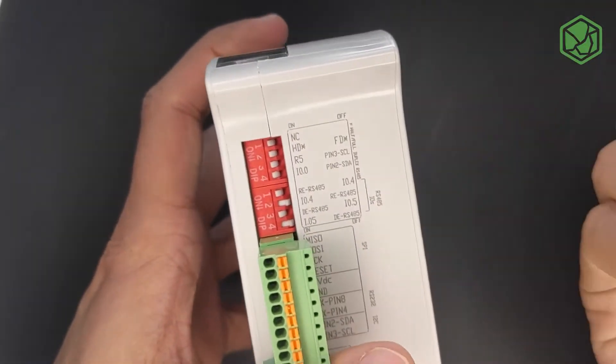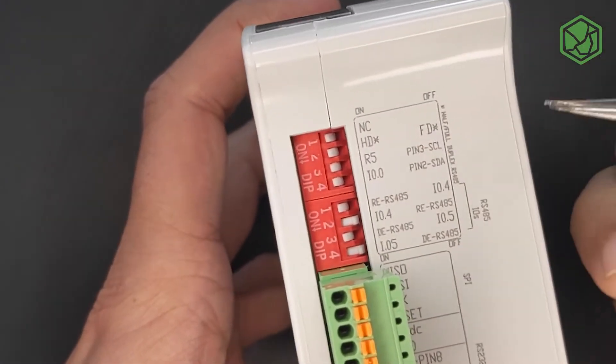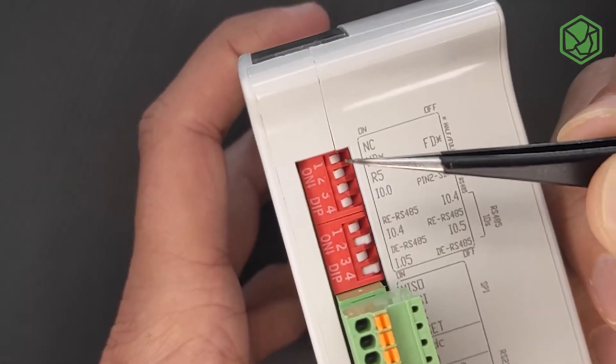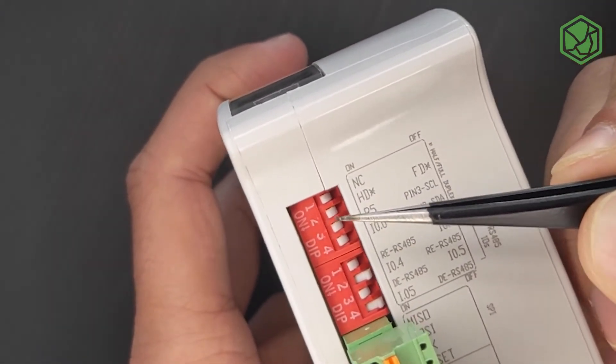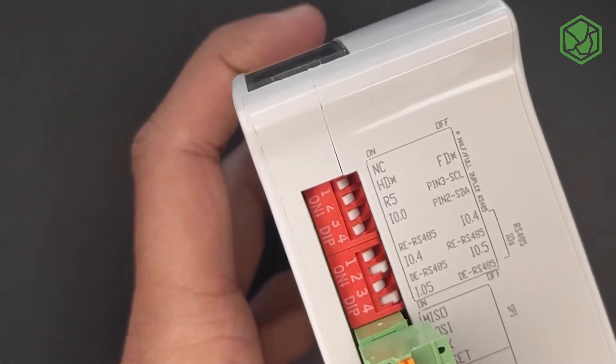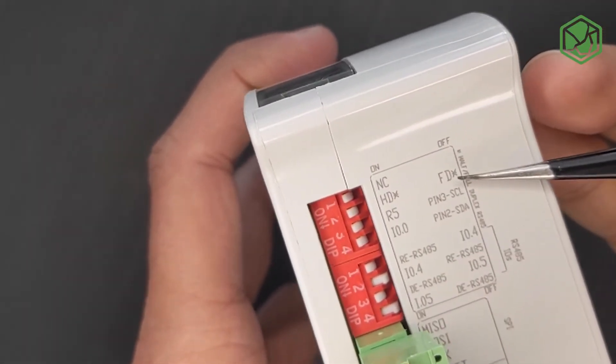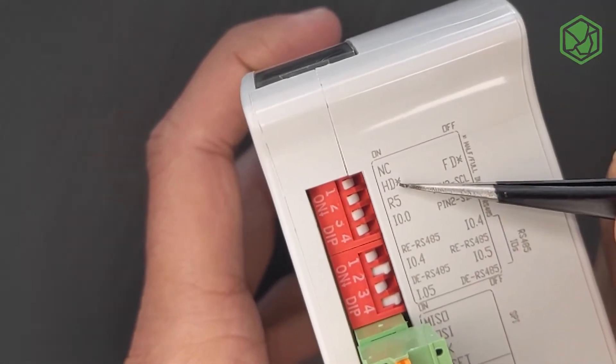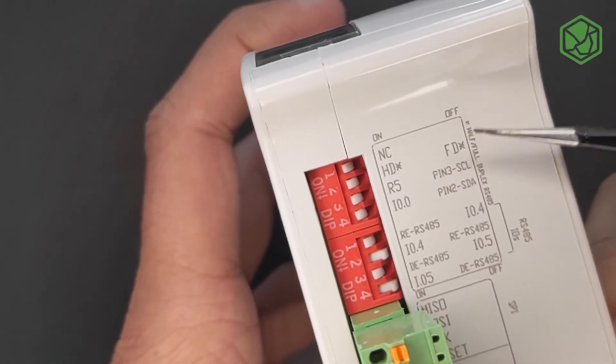Furthermore, for RS-485 communications, on the right zone you will have two blocks of DIP switches. Switch number two of the DIP switch belongs to the half duplex or full duplex configuration. If it's turned on, it's half duplex. If it's turned off, it's full duplex.